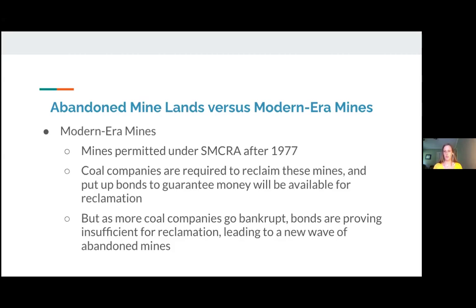Basically, a lot of states don't have sufficient bonds in place to guarantee reclamation. Either states have calculated bonding rates too low, or they've used what are called pool bonds, where multiple companies pay into a state pool that is not set up to cover every single permit in the pool. And most recently, because of accelerating bankruptcies, we're seeing some third-party insurance companies — called surety companies — that provide the bonds at risk of not being able to pay out. It's getting to a point where it may be too late to make improvements to state bonding systems, so we need to figure out how we're going to make up a shortfall in funding for this new wave of essentially abandoned mine lands.